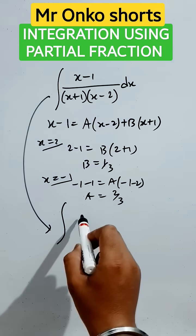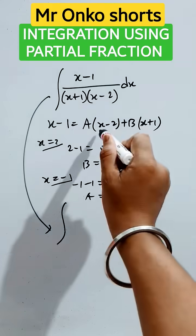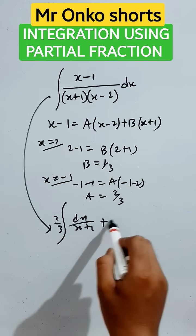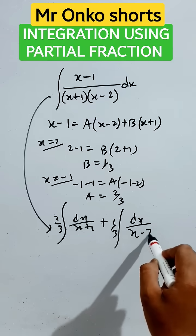We will manage this as integration of a by x plus 1. So it will be 2 by 3 outside, dx by x plus 1, plus it is b by x minus 2.